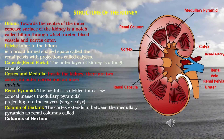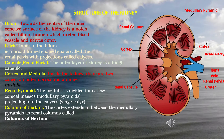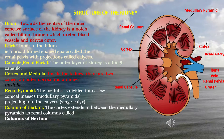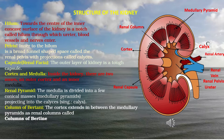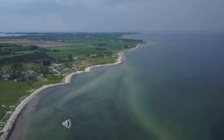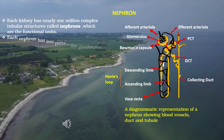Towards the center of the inner concave surface of the kidney is a notch called the hilum, through which the ureter, blood vessels, and nerves enter. Inner to the hilum is a broad funnel-shaped space called the renal pelvis with projections called calices. The medulla is divided into conical masses called medullary pyramids projecting into the calices. The cortex extends between the medullary pyramids as renal columns called columns of Bertini.